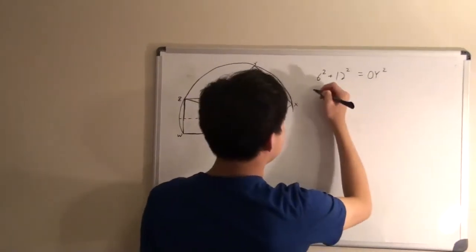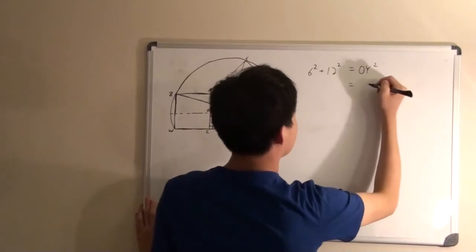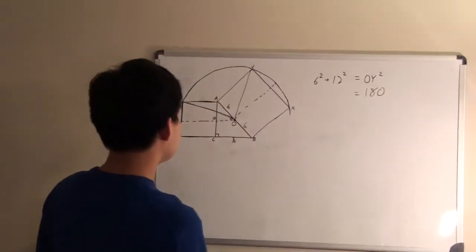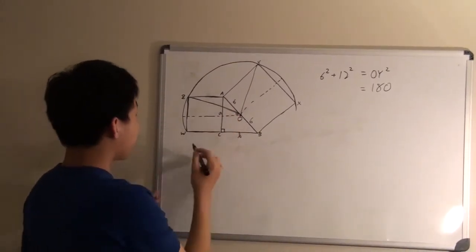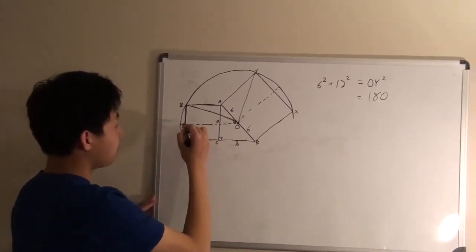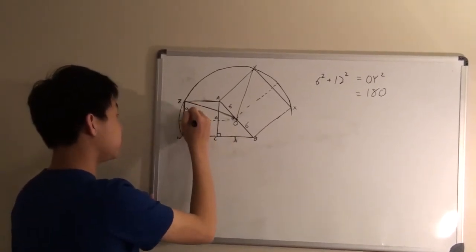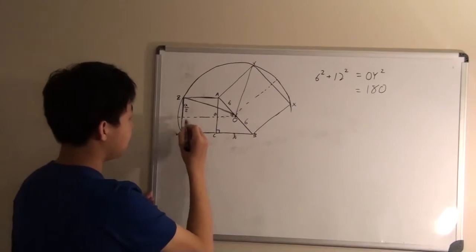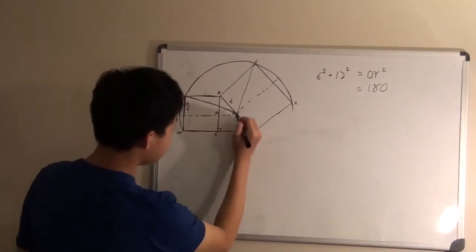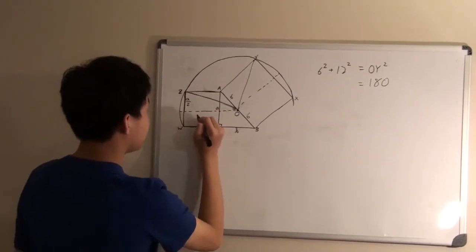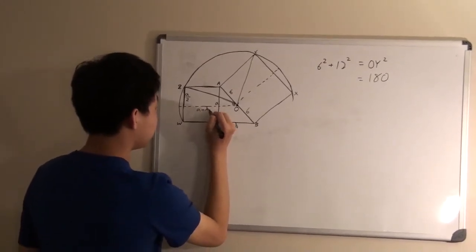And by the way, 6 squared plus 12 squared is equal to 180. So coming back here, this length would be half of AC, so this would be A over 2. And this length would be half of B plus the A, so that would be A plus B over 2.